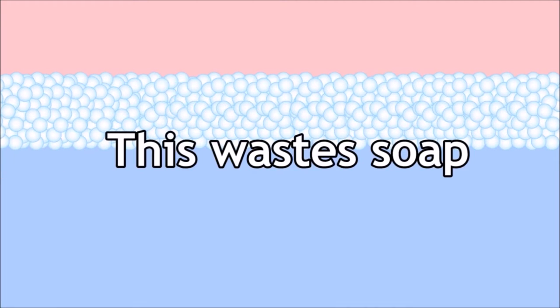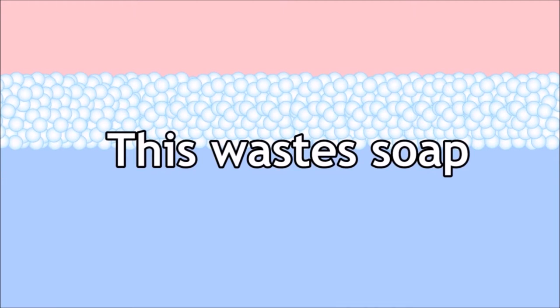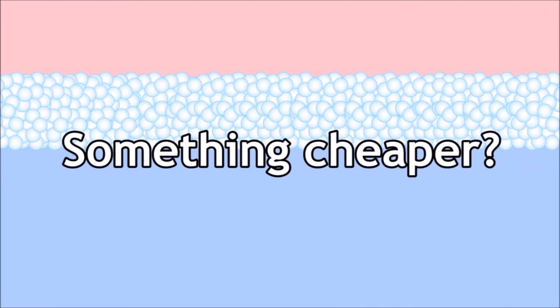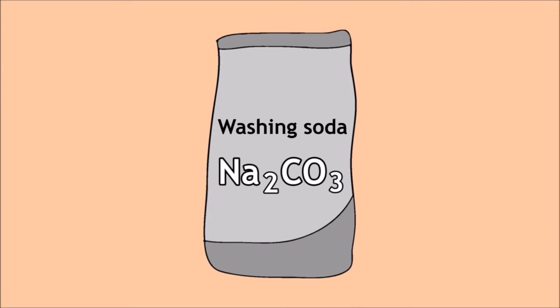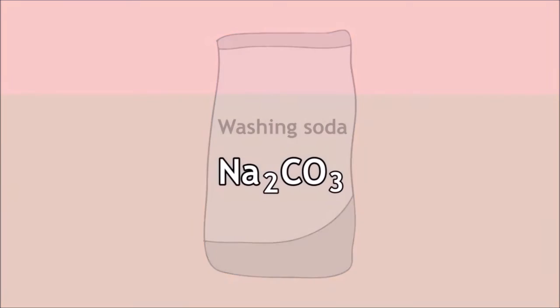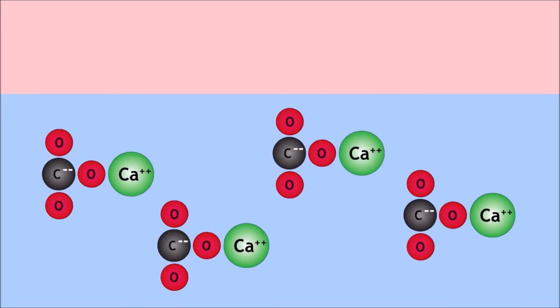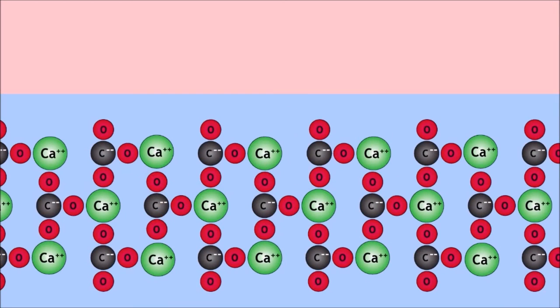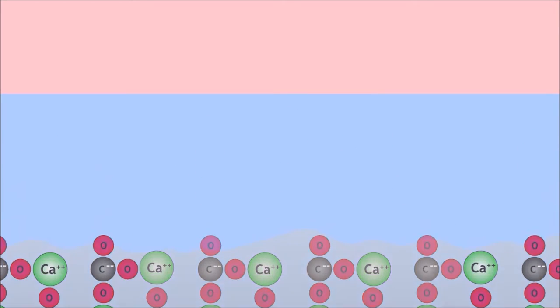However, this wastes soap, so we need to find something cheaper that will react with the calcium ions in the water and form a precipitate, sort of removing them from the water. Enter washing soda — sodium carbonate. Much cheaper than soap. When you add the soda, the calcium ions join up with the carbonate ions, forming limestone as a precipitate, leaving the water free of the hard ions.